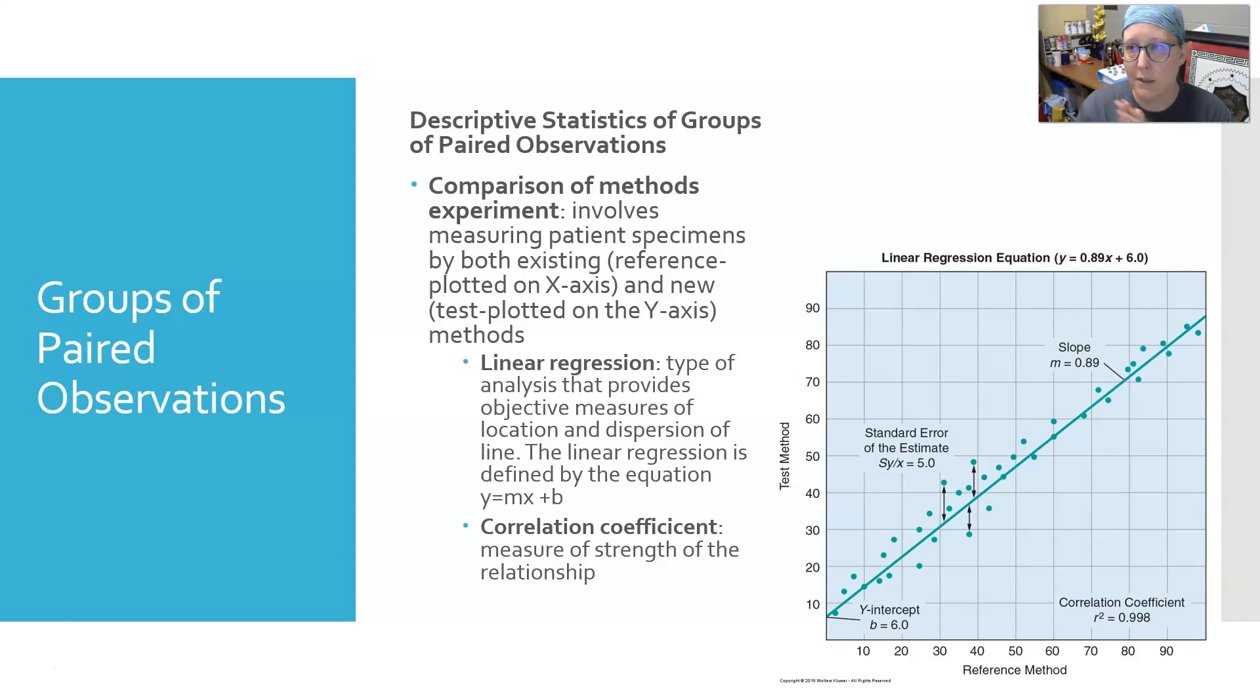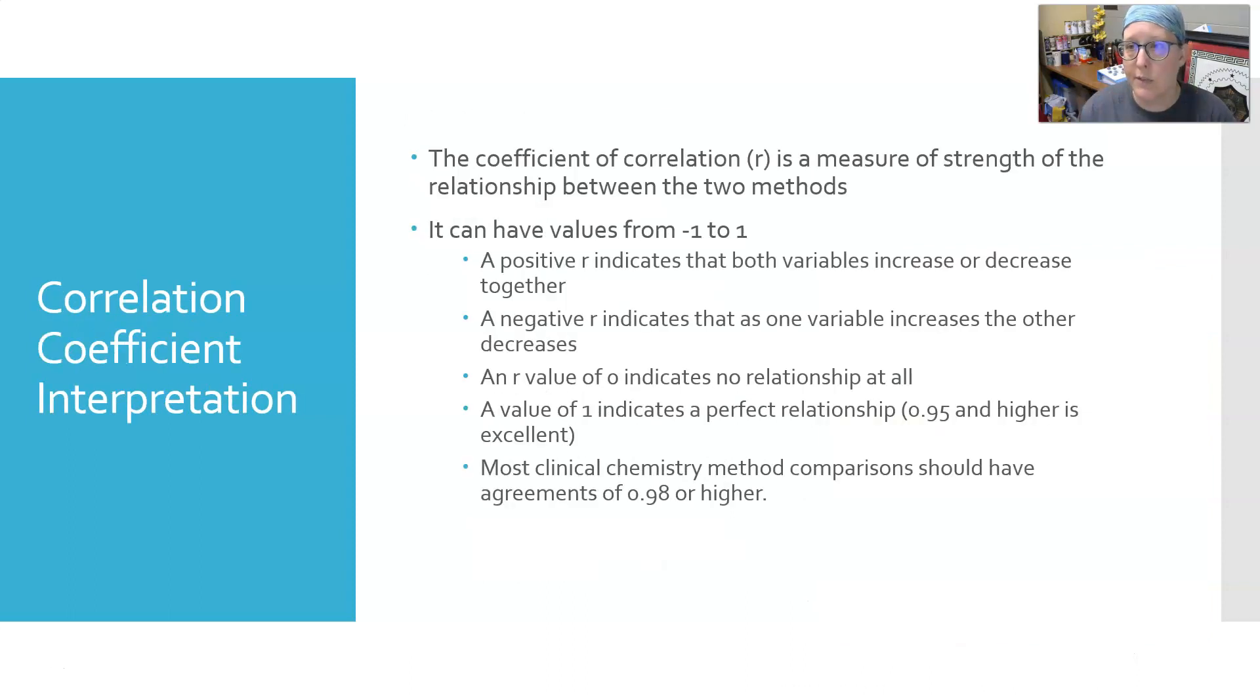With the data set of the new versus the old or machine A versus machine B, you can run a correlation coefficient calculation. The correlation coefficient measures the strength of the relationship between the reference method and the test method. It can have values from negative one to one, indicated by the letter r. A positive r indicates that both variables increase or decrease together. A negative r indicates that as one variable increases, the other decreases.